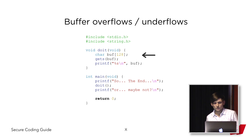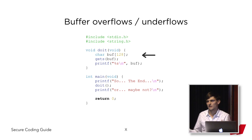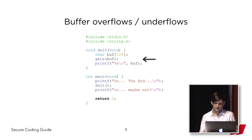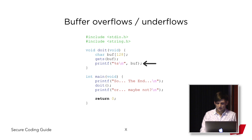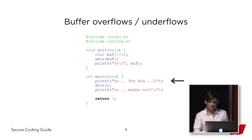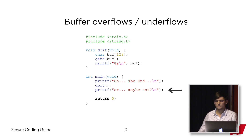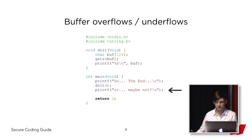We have this function called doit, which is a void function that takes void as an argument. In the first line of this function, we create a static array with a size of 128 characters, and then we use the gets function to prompt the user from the console. Whatever the user types into the console will be fit into the buffer we created, and then we just print that string to the console. In our main function, we print some stuff first, then call the doit function, and then print some other stuff.